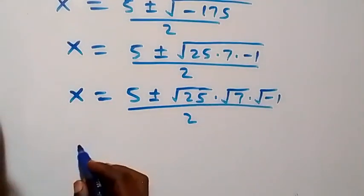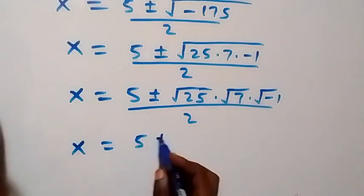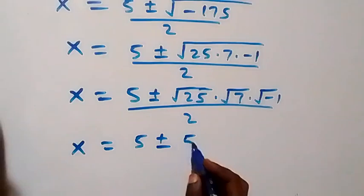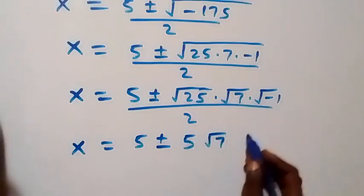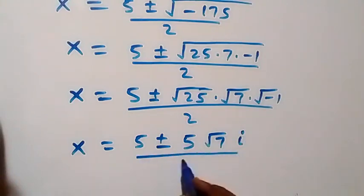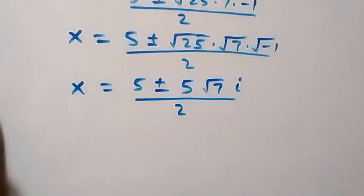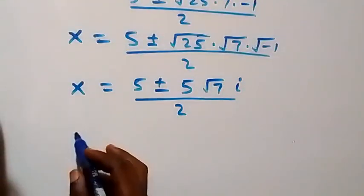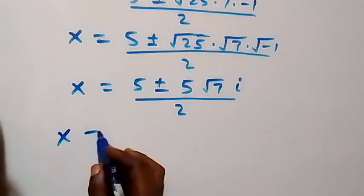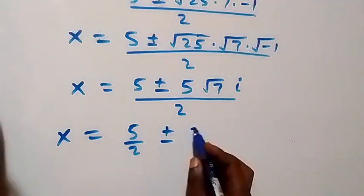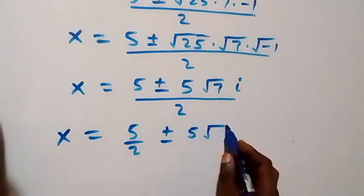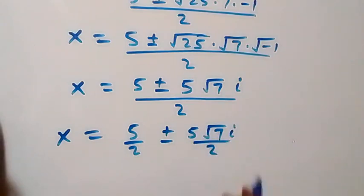This becomes x equals five plus or minus five times root seven times i, all over two. Which we can write as x equals five over two plus or minus five root seven i over two. This gives us two possible values of x.